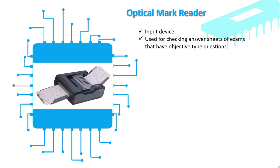So, the optical mark reader is used for checking the answer sheets of exams that have MCQs. While the device is called the optical mark reader, the entire process of reading the OMR sheet is called optical mark recognition.